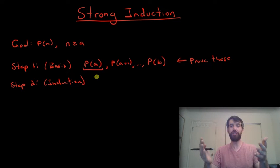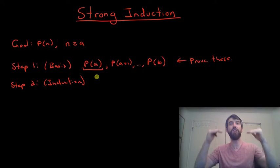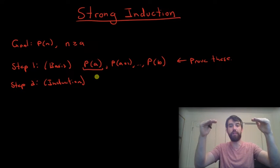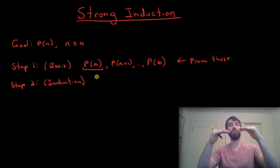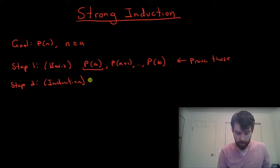It's still going to be the case I'm trying to prove the k+1th level. But what's changing here is that instead of just assuming the kth level, I'm assuming all of the lower levels.